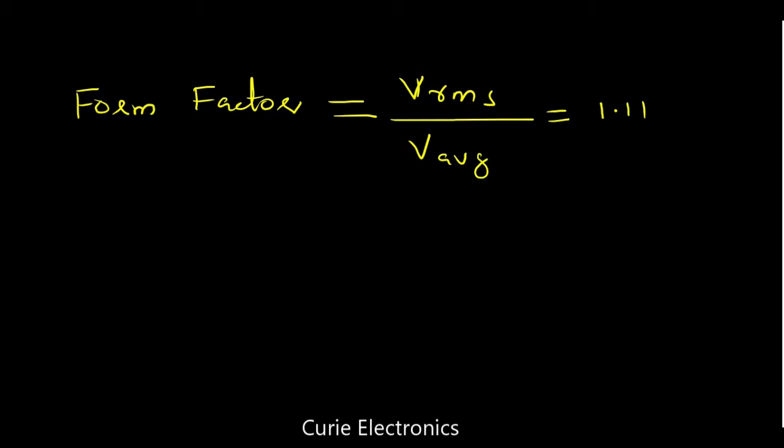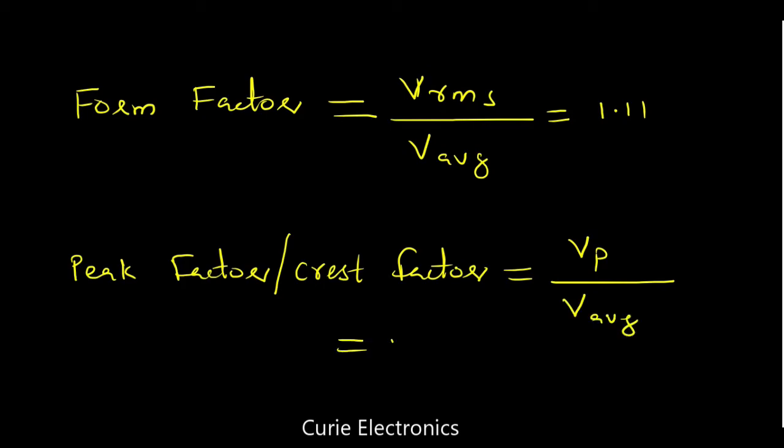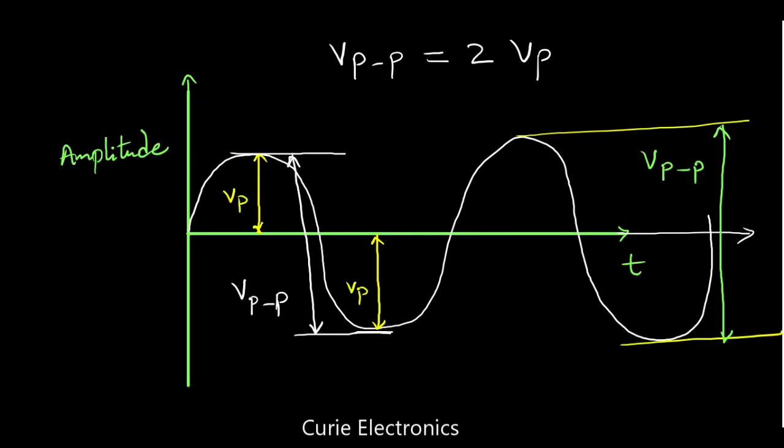Similarly, one more ratio is there, that is the peak factor, peak factor or crest factor. And it is the ratio of Vp, Vp upon average value, V average, and this value comes to 1.414. So now you got the idea of form factor, peak factor. It is 1.414, Vrms and Vp-p, Vp.